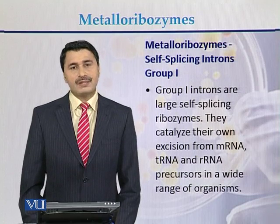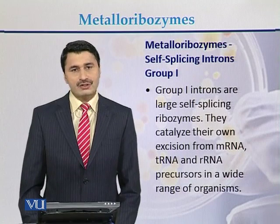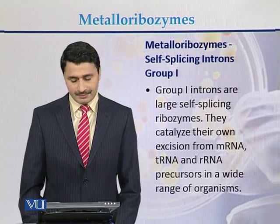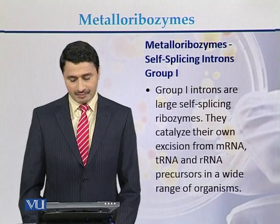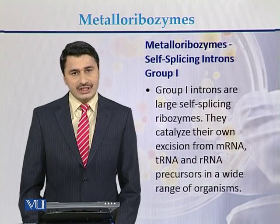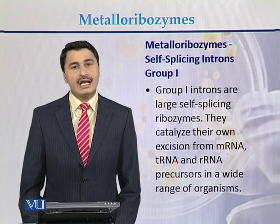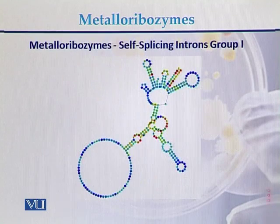Self-splicing introns are of two types. The first type is called self-splicing intron group 1. Group 1 introns are large self-splicing ribozymes that catalyze their own excision from messenger RNA, transfer RNA, and ribosomal RNA precursors in a wide range of organisms. This is the diagram of a typical self-splicing intron group 1.